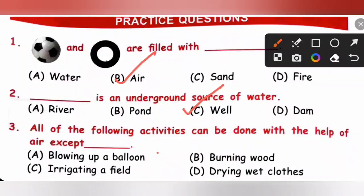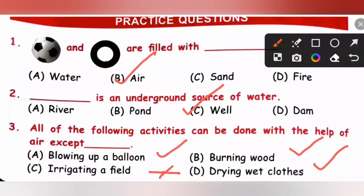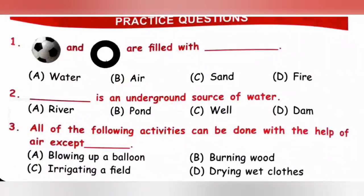Question 3: All of the following activities can be done with the help of air except dash. Blowing up a balloon — yes, done with air. Burning wood — done with air. Irrigating a field — done with water, not air. Drying wet clothes — done with air. So the answer is irrigating a field; option C is correct.